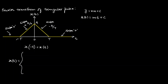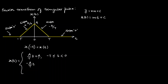From minus T to 0, the equation of the line has slope plus A by T and y-intercept A. From 0 to T, the slope is minus A by T and x(t) is plus A at t = 0. This is the equation of the straight line from 0 to T, and x(t) is 0 otherwise.